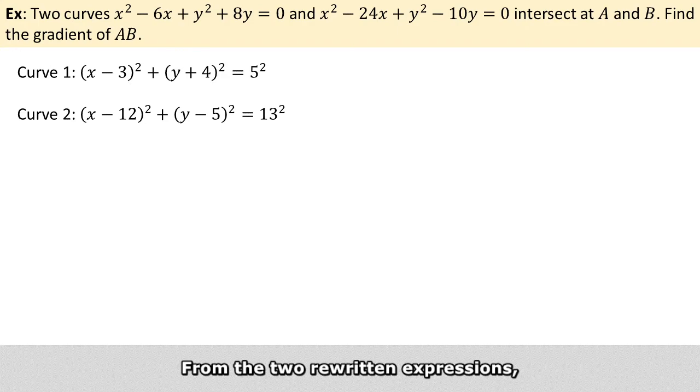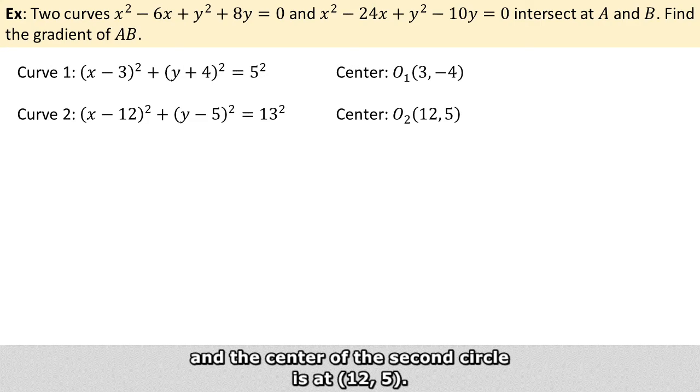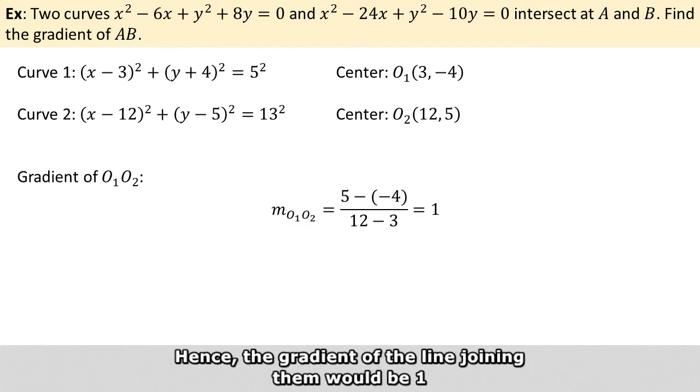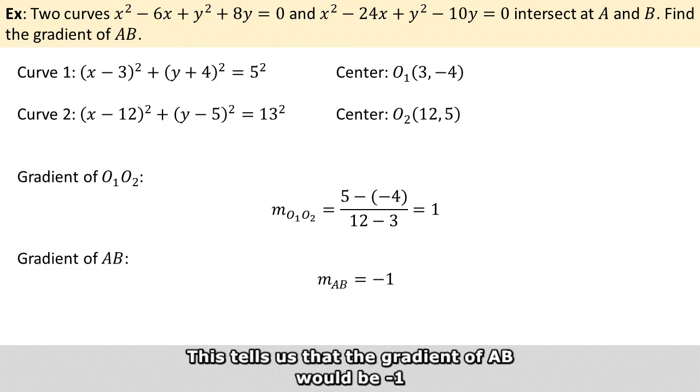So from the two rewritten expressions, we see that the center of the first circle is at (3, -4), and the center of the second circle is at (12, 5). Hence, the gradient of the line joining them will be 1, as determined by taking the quotient of their difference in y to their difference in x. So this tells us that the gradient of AB would be -1, because the product of the two gradients is -1.